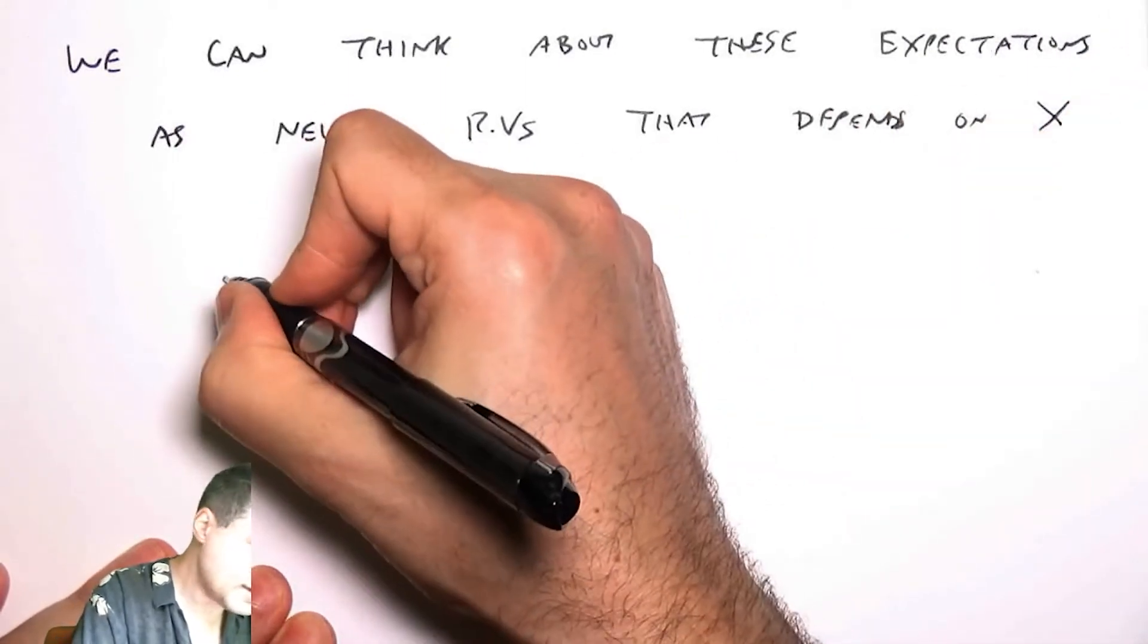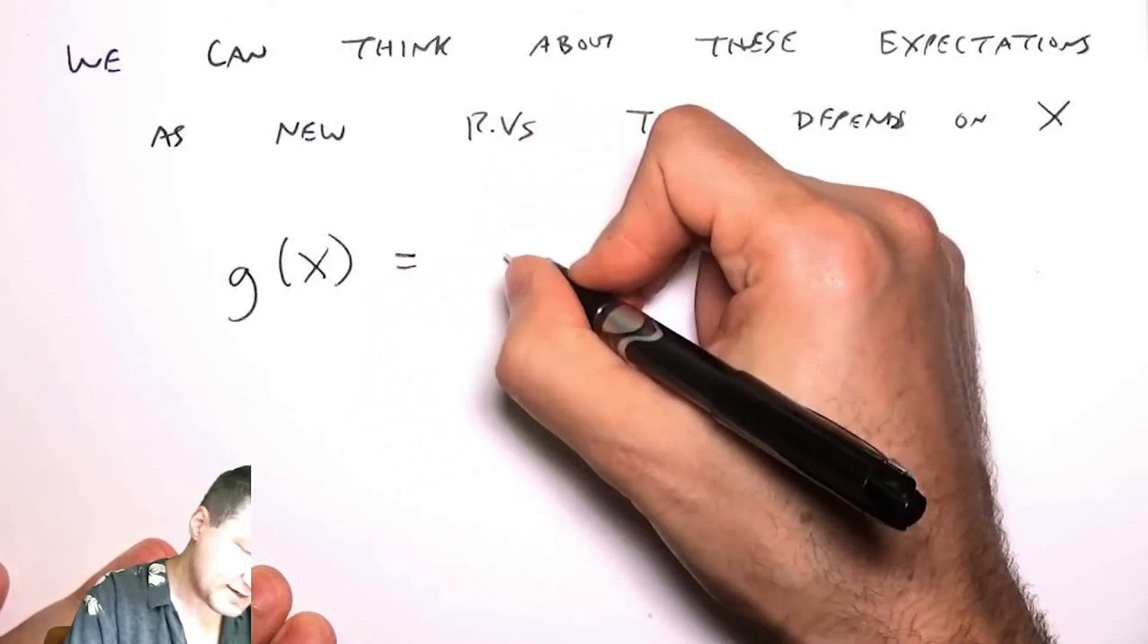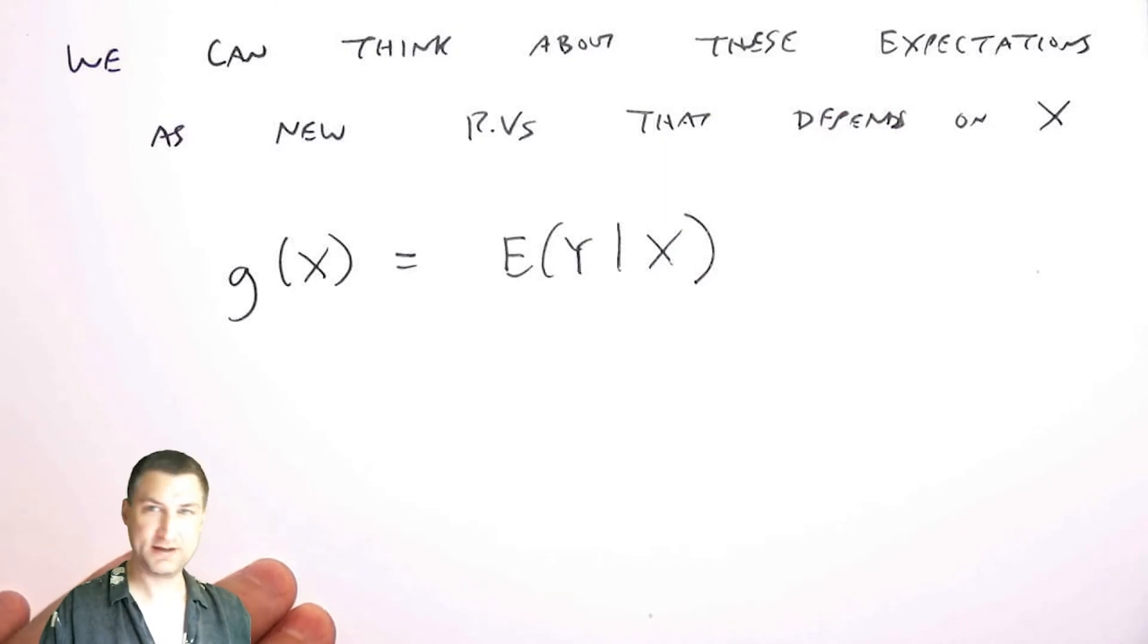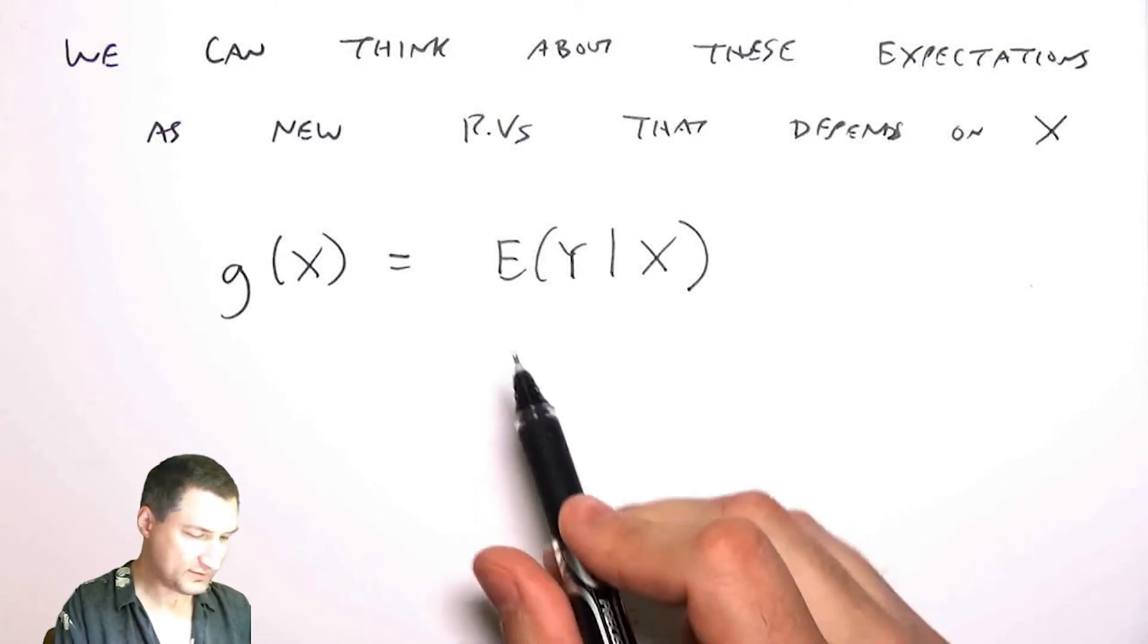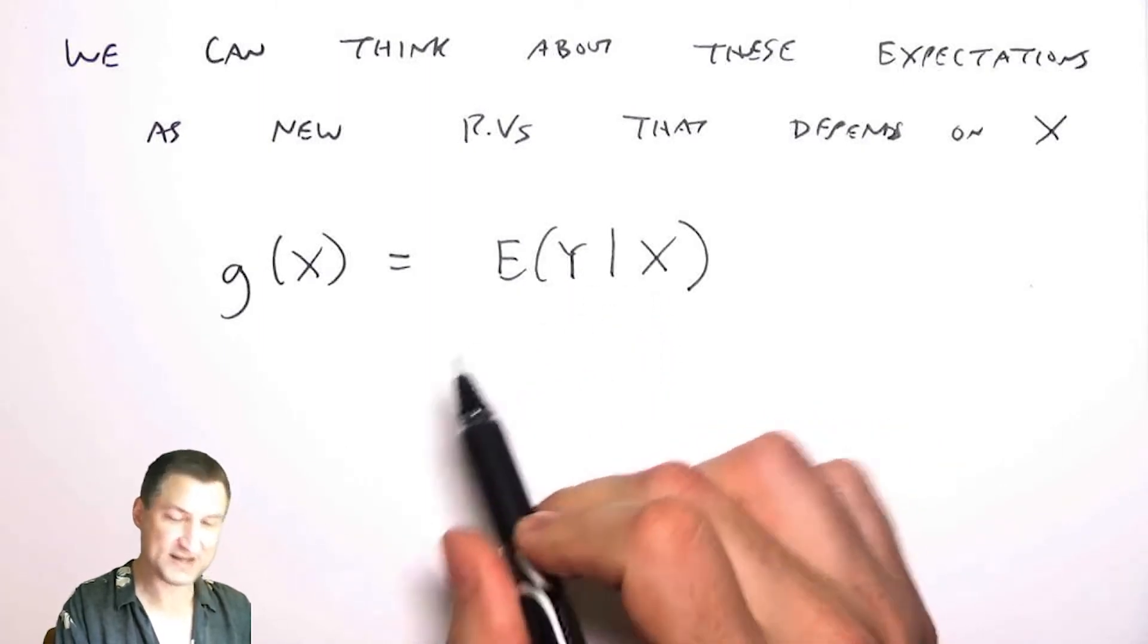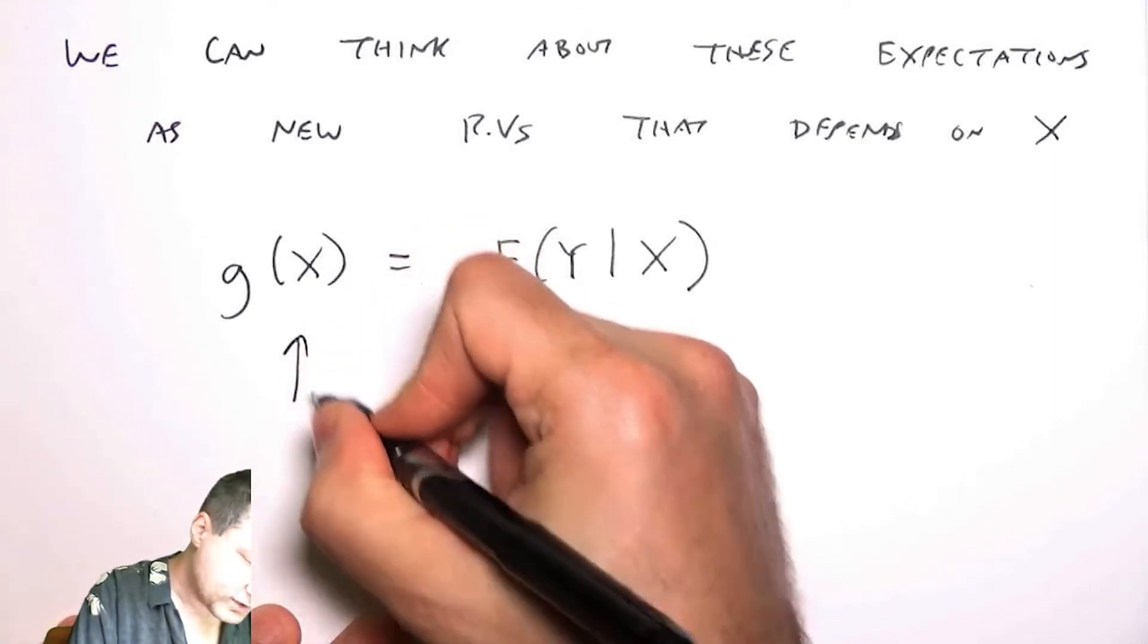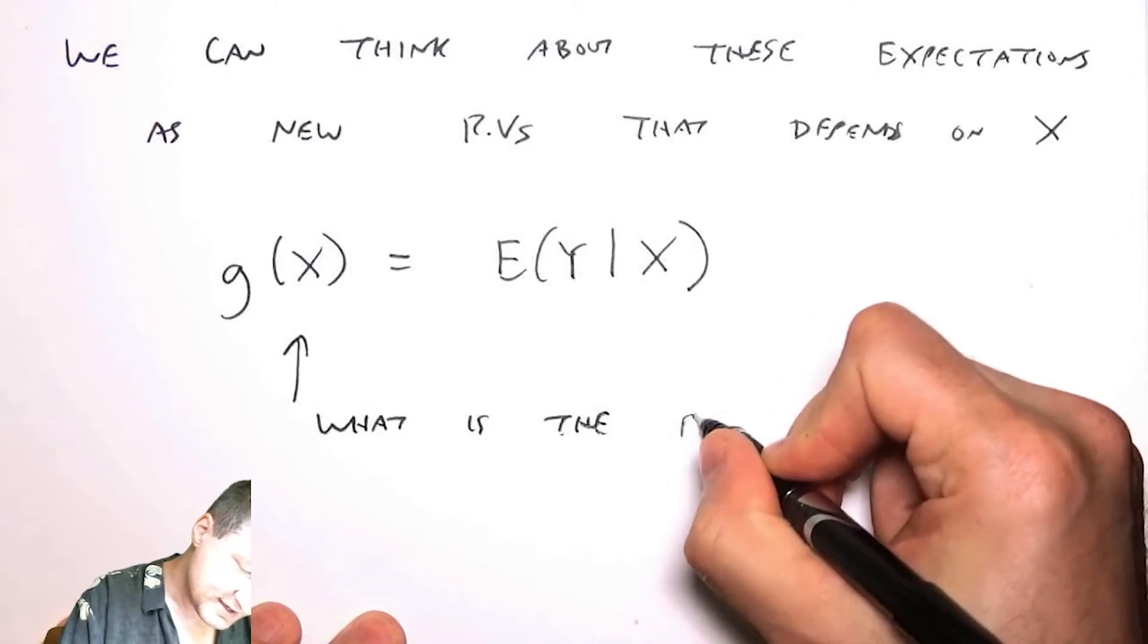That is, I have a random variable I'm going to call g(x) that is the expected value of y given x. That is, I do an experiment to get x, then I compute this value y that depends on x, and I compute the expected value of that. So I can kind of ask, what is the expected value of this?